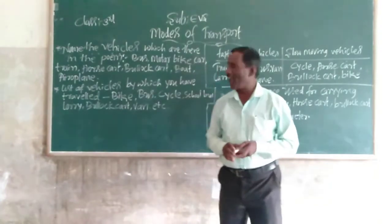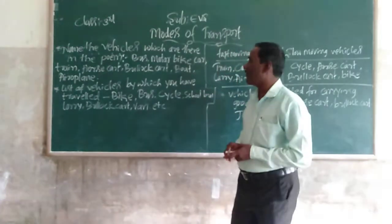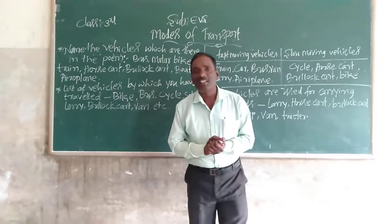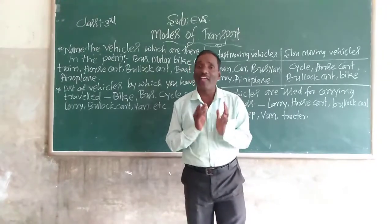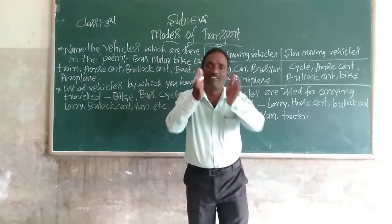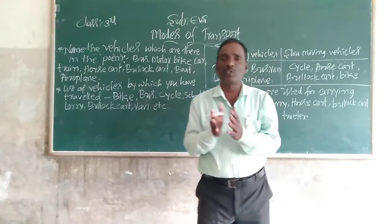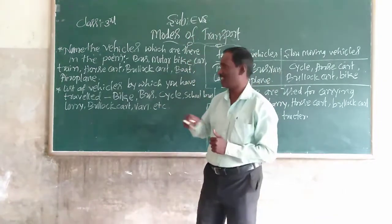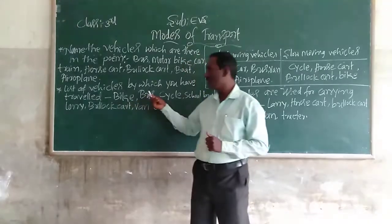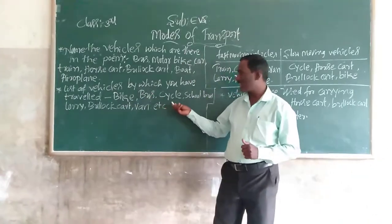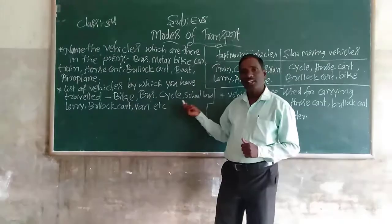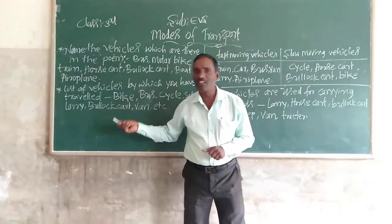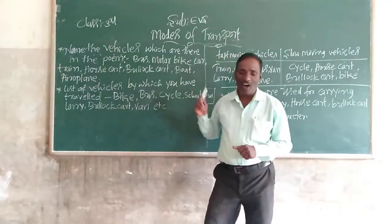Next, make a list of vehicles by which you have travelled. Think of the vehicles by which you have travelled — you have to go from one place to another place. Examples: bike, bus, cycle, school bus, lorry, bullock cart, and auto.